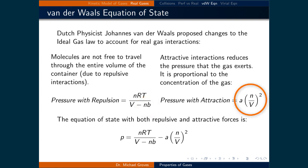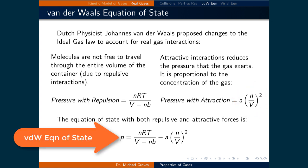He also accounted for the attractive interactions with a term that he subtracted from the repulsive pressure term since the attractive interactions would tend to draw molecules closer together and reduce the pressure of the system. This attractive term is proportional to the concentration of the gas. The van der Waals equation of state is defined by the pressure being equal to nRT divided by V minus nB minus A times n over V squared.